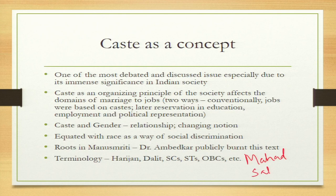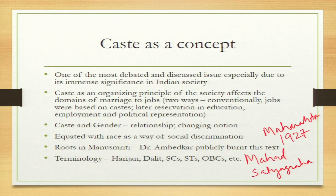Caste in India has its roots in the Manusmriti. It was Dr. Ambedkar who publicly burnt this text during his Mahad Satyagraha in 1927 in Maharashtra. There is also a politics of naming: Gandhi used the term 'Harijan,' to which Ambedkar had objection, and gradually the term 'Dalit' started being used. The terms Scheduled Castes and Scheduled Tribes came in the Government of India Act 1935. OBCs — Other Backward Castes — is another term. These different terms denote different castes in India and reflect important social realities.